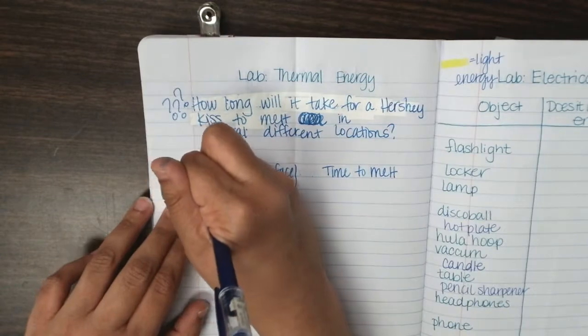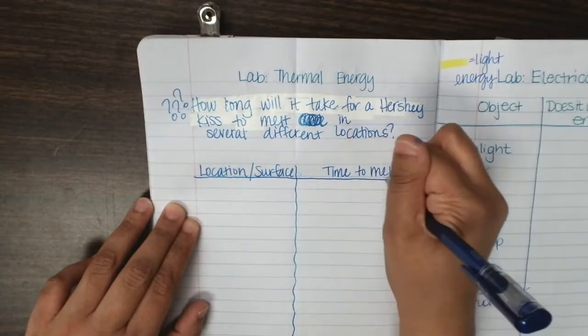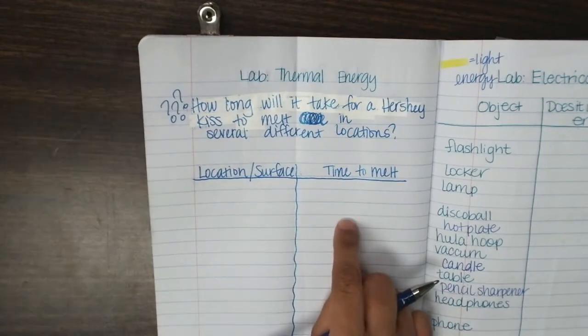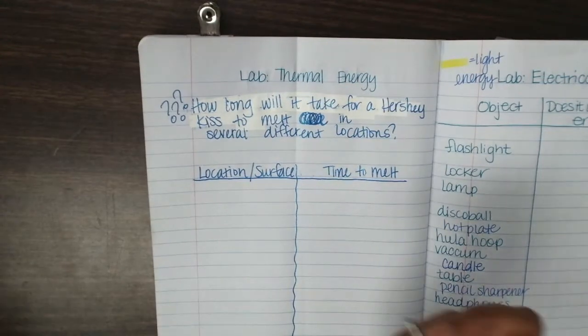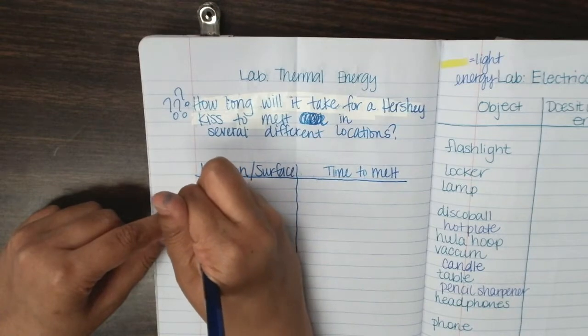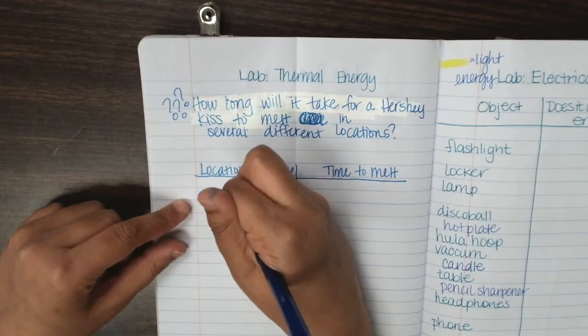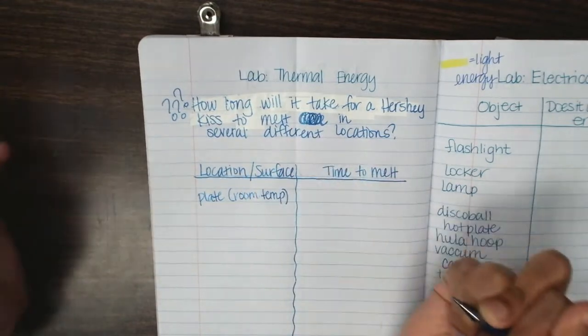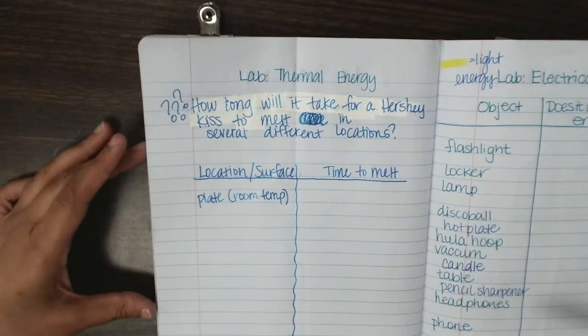So in order to do this experiment, I need a stopwatch to measure the time. And then I need different locations. So here's what I'm thinking. One is on a plate. We're not going to do anything to it. It's just going to be room temperature.